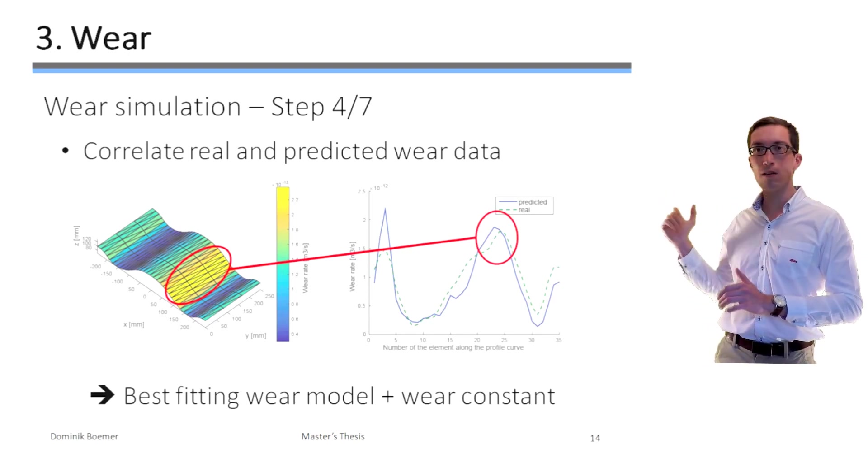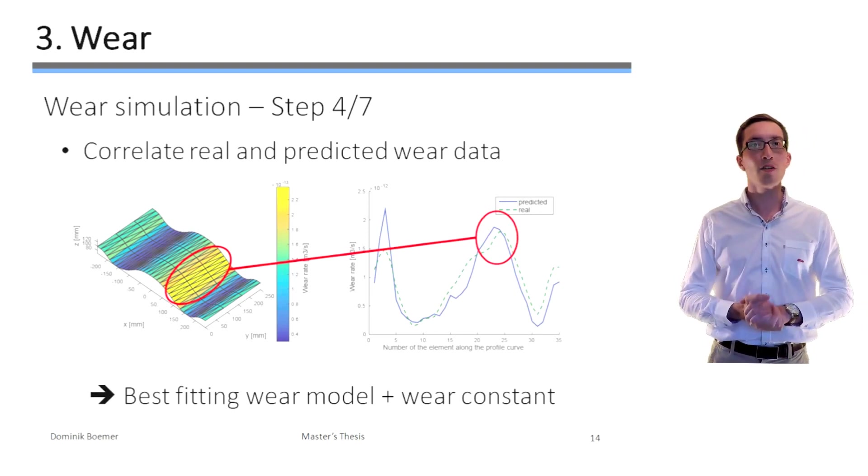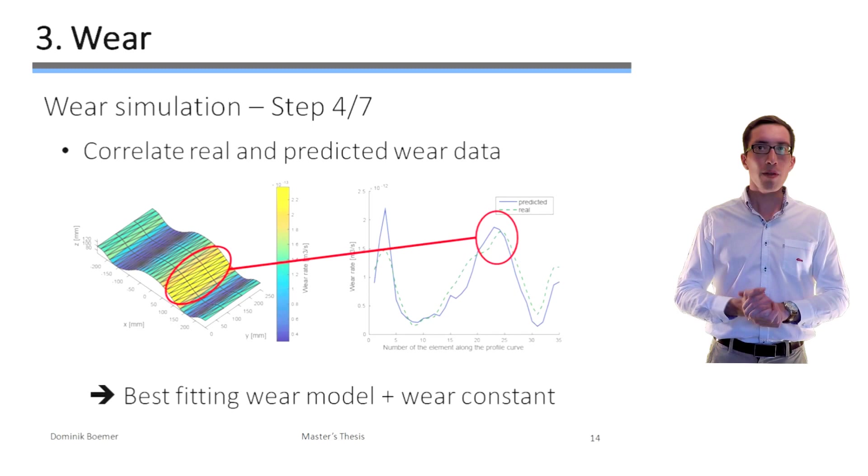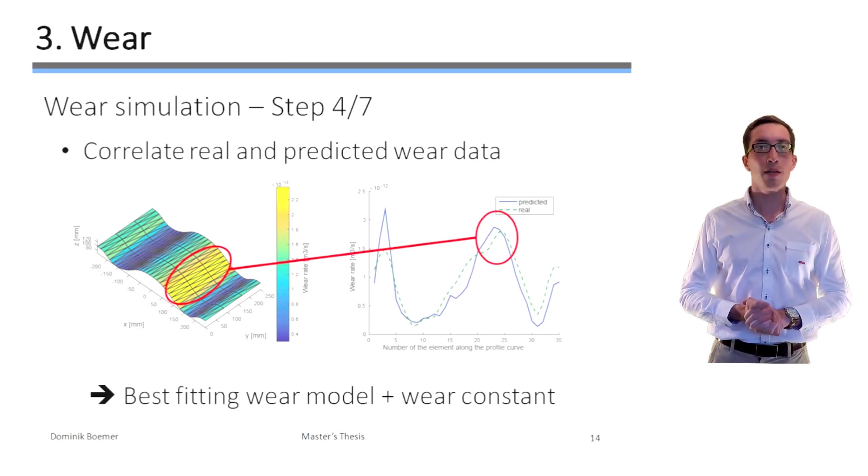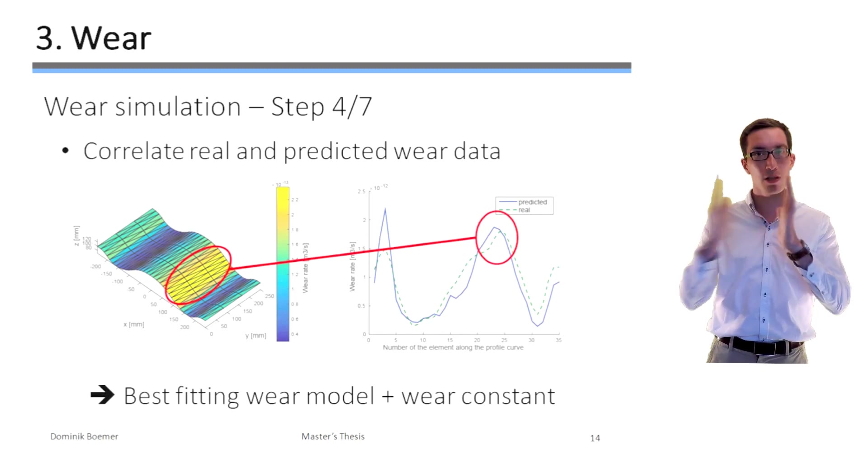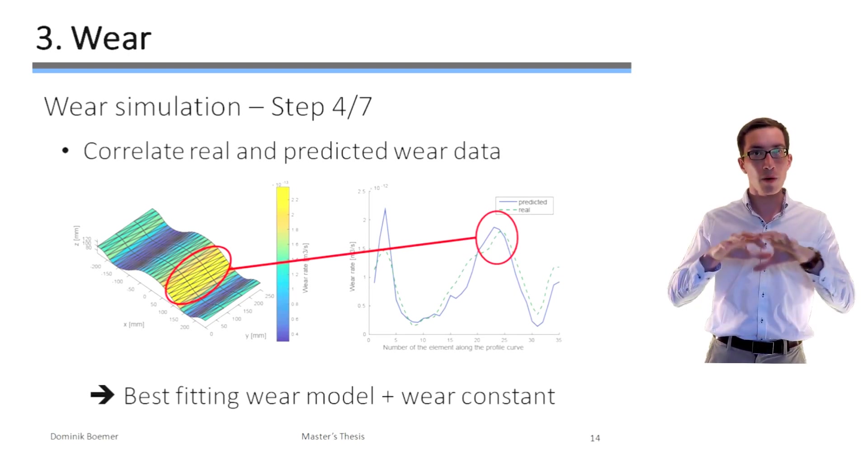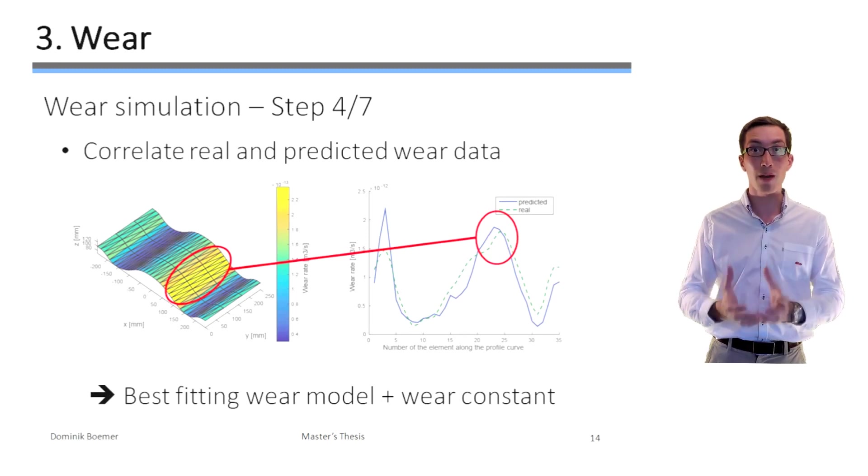More precisely, this figure shows the wear rate for each axial stripe of the liner mesh along this liner plate. So for this reason, this peak here corresponds to the leading edge of the big wave of the profile. Due to the relatively good correlation between this real wear and the predicted wear, the tangential damping energy is actually the best fitting wear model. And we also determined its wear constant.